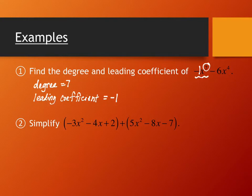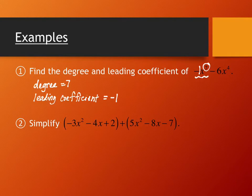A lot of what we'll do in this lesson is simplify polynomials by combining like terms — using addition, subtraction, and multiplication. Like terms have the same variable raised to the same exponent. With addition, the parentheses aren't really necessary; distributing the plus sign doesn't change anything, so we can move right through them.